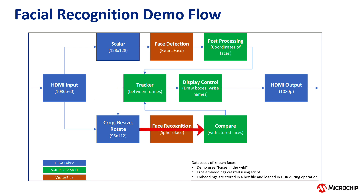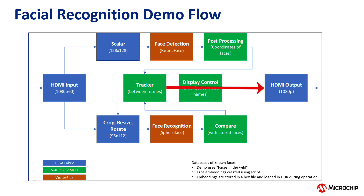SphereFace IDs the faces and assigns labels or names to those it recognizes. The tracker merges this information with coordinates as it readjusts back to the original frame size. In the final step, the display control draws the boxes with the names around each face and drives the frames out HDMI to a monitor.